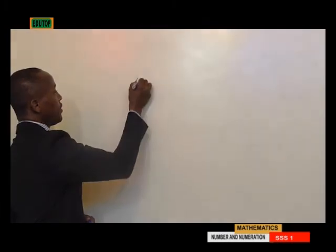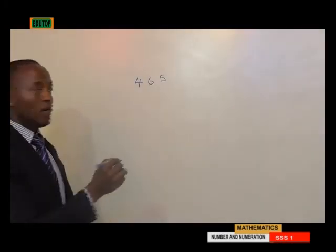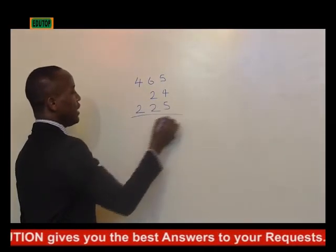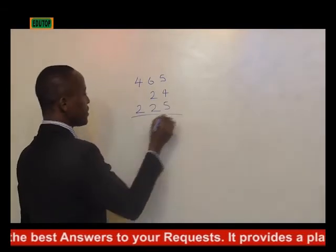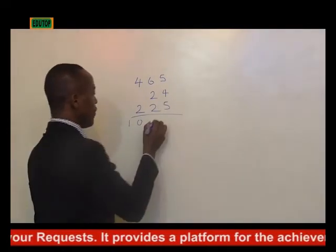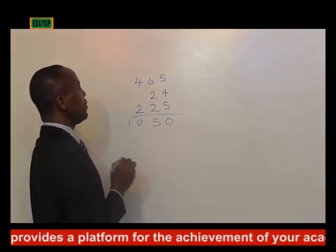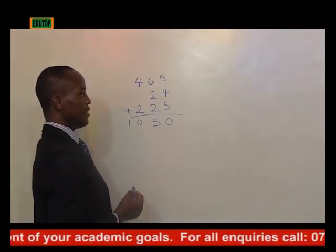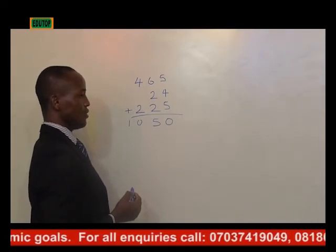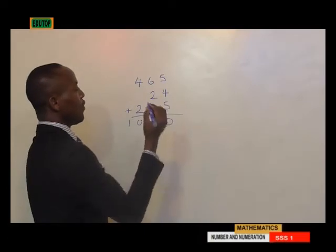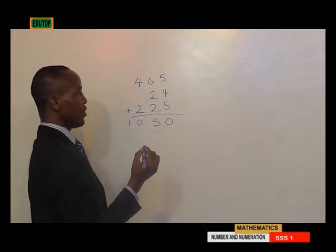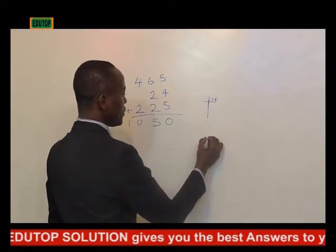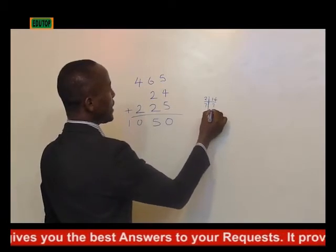We are having 465, plus 24, plus 225, and we are told the answer is 1050. Let's add the units column: 5 plus 4 is 9, plus 5 gives us 14. For 14 to give remainder 0 when divided by our unknown base, we need to look at the factors of 14: 14 divided by 2 gives 7, and 7 gives 1. So the factors of 14 are 1, 2, 7, and 14.